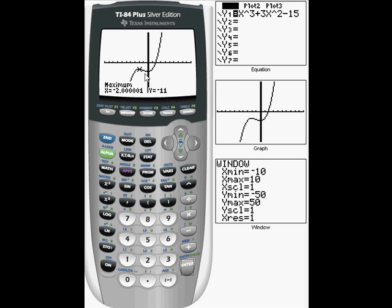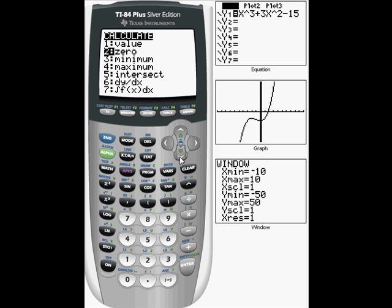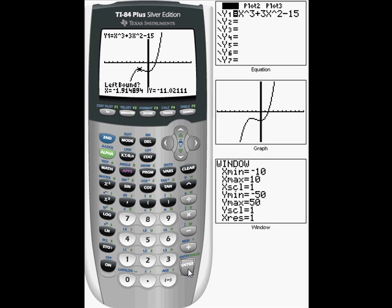Now let's find our local minimum. So we're going to do the same thing, second calc. But this time, we're going to choose minimum, and I'm going to hit enter. I'm going to move it over just a little bit. This is my left bound, since I'm looking for this spot right in here, my local minimum. I'm going to hit enter.